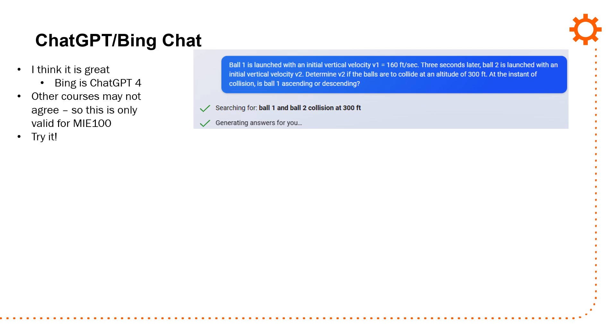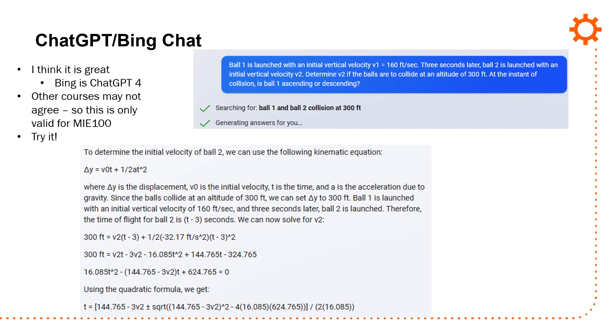I'm going to solve this problem. I chose a problem that was just a word problem. There's a figure, and I'll show the figure later. Ball one is launched with an initial vertical velocity, V1 equals 160 feet per second. Three seconds later, ball two is launched with initial vertical velocity, V2. What is V2 if the balls are to collide at an altitude of 300 feet? At the instant of collision, is ball one ascending or descending?